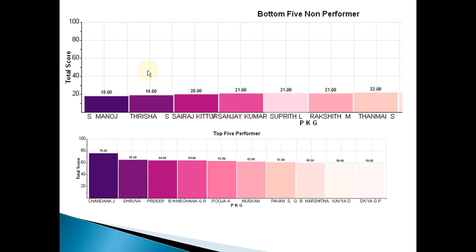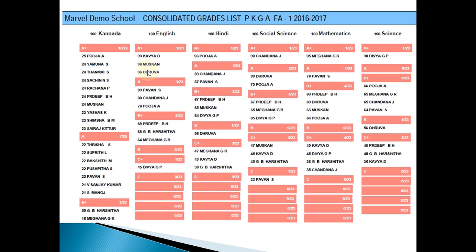This is a very interesting graph showing the entire class and how each student is performing. In the very first column, for Kannada subject, the total marks is 100 — out of 23 students in that particular grade, 10 students have scored A-plus grade, with Puja scoring 25, 24 and Tanmay 24. You can see 7 students scored A-grade and only 2 students scored B-plus. Similarly, you can see the distribution in English, Hindi, Social Science, Mathematics and Science.